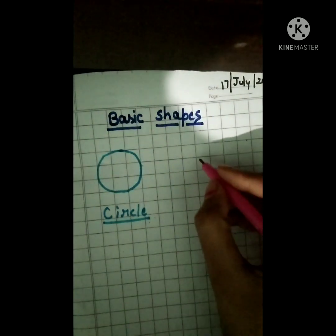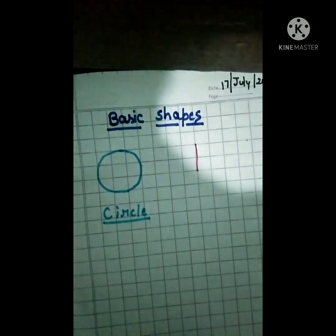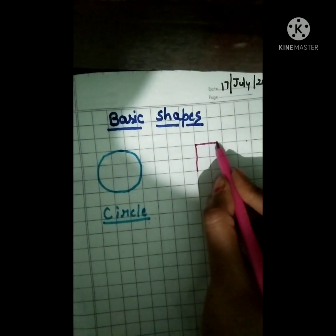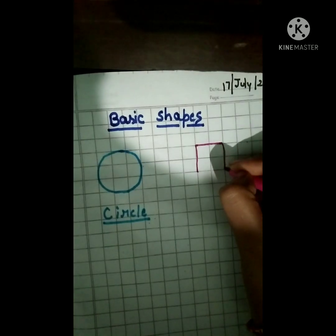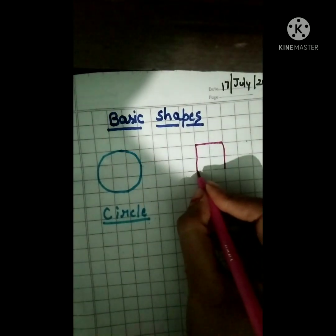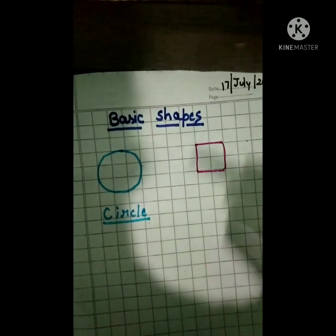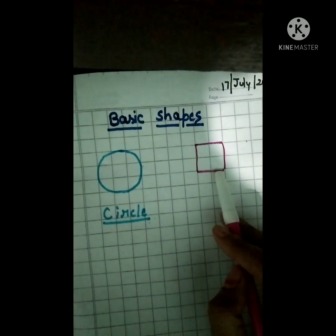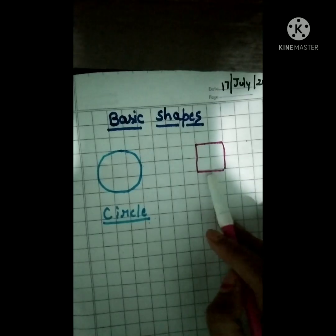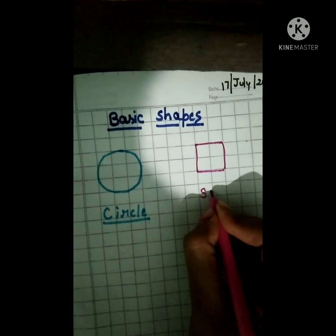And the second shape is square. Square. So, we will make it. Square — standing line, one sleeping line, again standing line and sleeping line. And this is square.